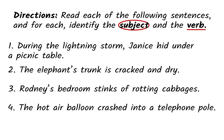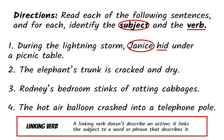In the first sentence, the subject is Janice, and what is she doing? She's hiding. Sentence two is a little tricky because here we have a linking verb. A linking verb is a kind of verb that doesn't express an action, but links the subject to a phrase that identifies or describes it. In this case, the linking verb is 'is,' and it's linking the subject of the elephant's trunk to the description that it is cracked and dry.